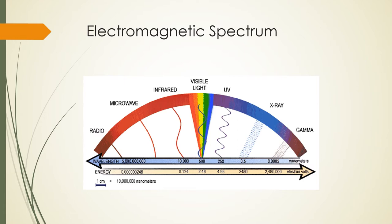Here is the electromagnetic spectrum. A starting point for understanding the spectrum is that visible light — such as red to blue — is only a small portion of the scale, going from about 400 nanometers to about 700 nanometers, which is a very tiny range.